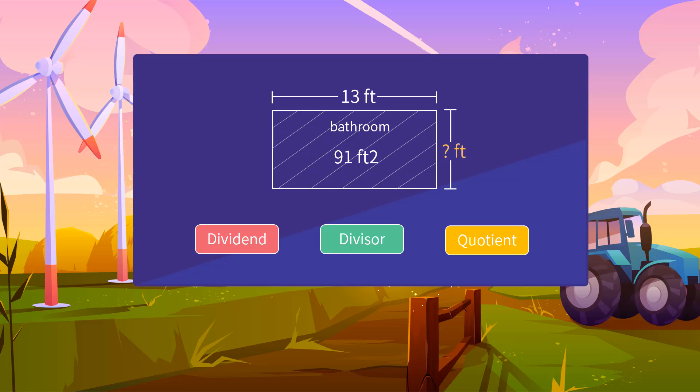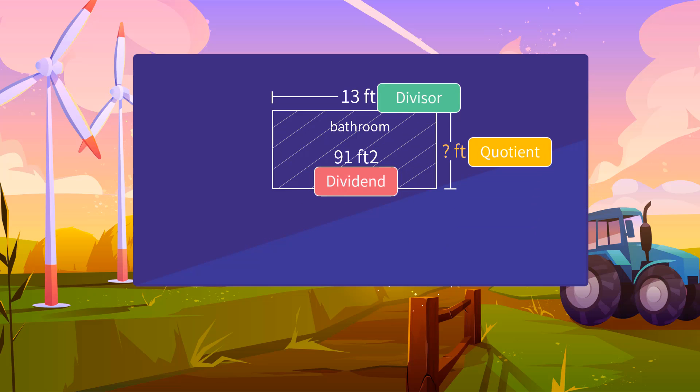We can find them by analyzing the information given by the question. We can see that the area of the bathroom is 91 square feet, which is the dividend.